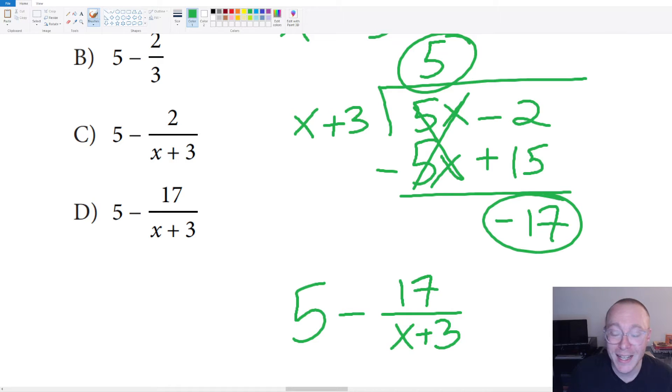That is the quickest way that I can think of, of sort of dividing out X plus three. Maybe there's a quicker way. If there is, definitely leave me a comment and let me know. But with all of that being said, we've got an answer. We've got choice D.